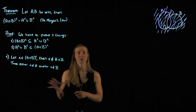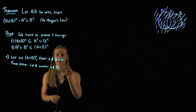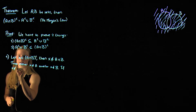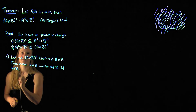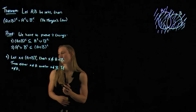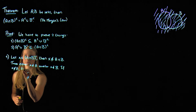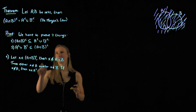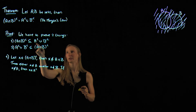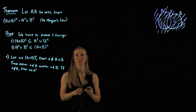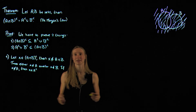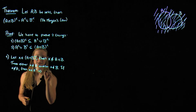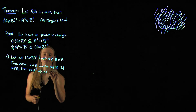Let's look at these two cases separately. First, if x is not in A, then x is in A complement by definition. If we look at the original sets — we take the union of A complement and B complement — so everything that is either in A complement or B complement is in this set. That means that x is in this union.